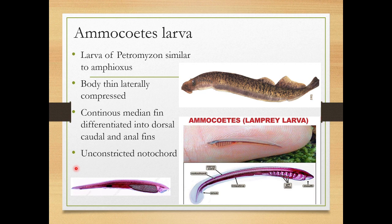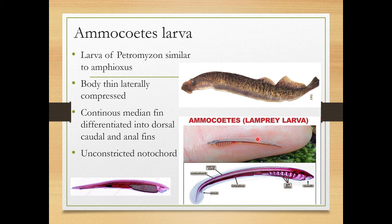In this video we are talking about the Ammocoetes larvae, the larval form of Petromyzon. Petromyzon comes under Cyclostomata. This larva morphologically resembles Amphioxus, which comes under Cephalochordata.